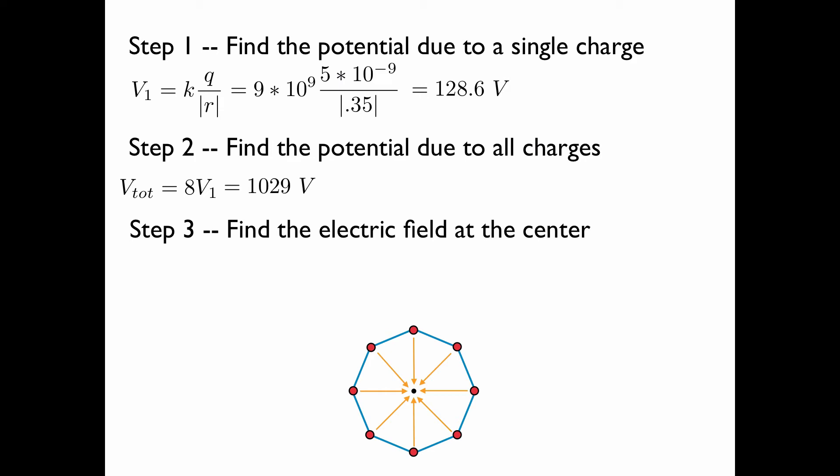Consider the pair of charges that is the top and the bottom, same magnitude opposite direction, so they cancel. The same is true for each of the other three pairs. We have, therefore, that by symmetry, the electric field is equal to zero at the center.